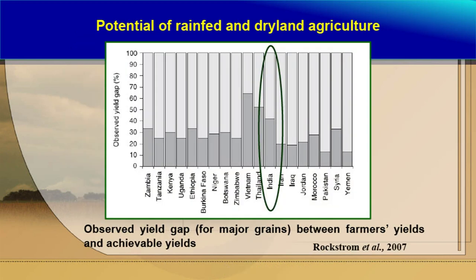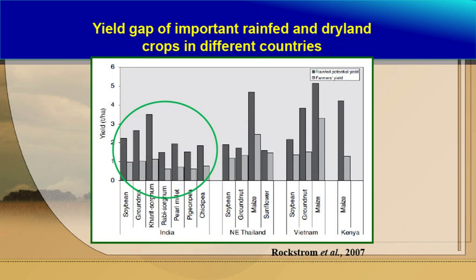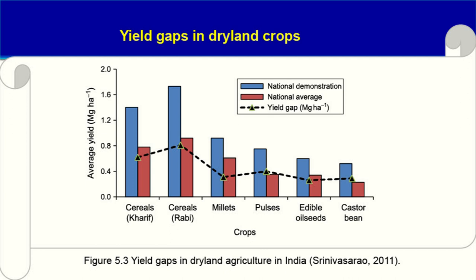The potential of rain-fed and dry land agriculture is still not being realized — actual yields remain far below possible yields. In India, we are getting hardly 40% of the possible yield, and the rest is the gap. For soybean, groundnut, kharif sorghum, and other crops, a big yield gap exists. The blue color represents national demonstration yield and the red represents the national average of rain-fed or dry land areas — there is a big gap between them, and we need to raise this red.